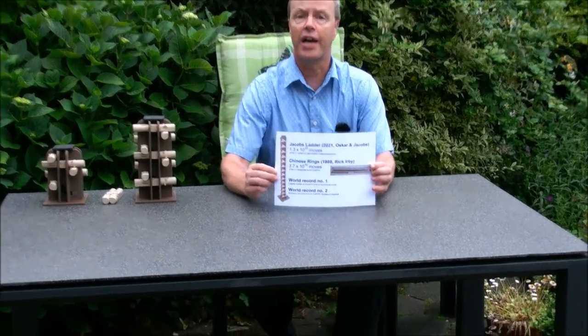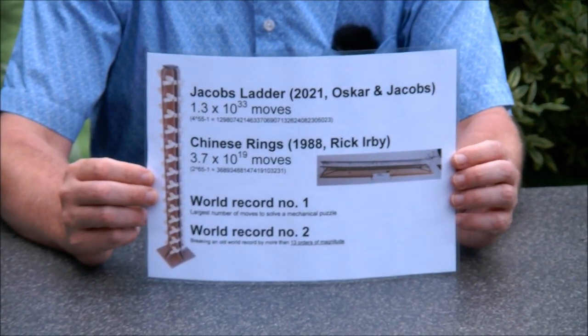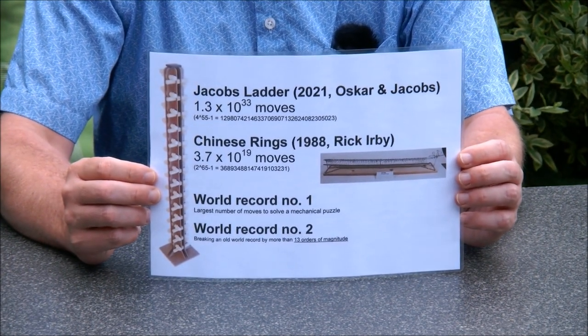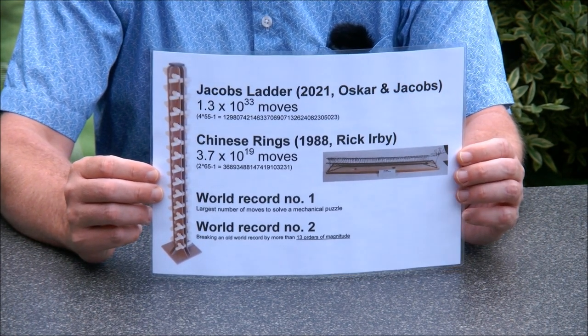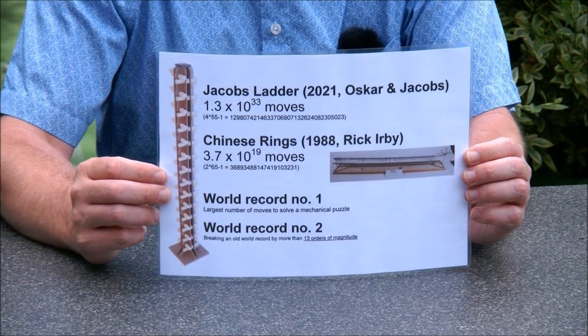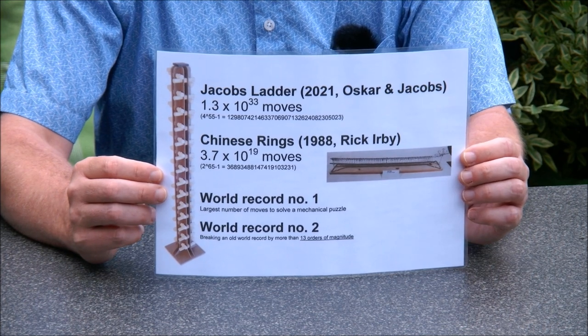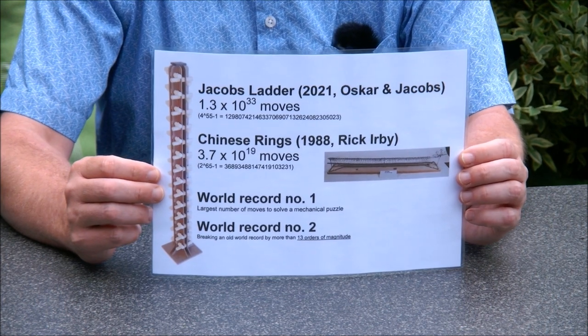So what are the numbers? Because I've said we're breaking a world record. Well Jacob's Ladder, it has four to the power of 55 states. Because we have 55 rods and each of them can have four states and we're going through them one by one. So the number of moves is four to the power of 55 minus one, which is about 10 to the 33rd number of moves. Which is quite a big number.